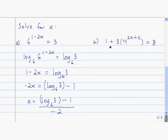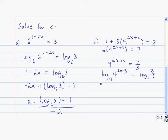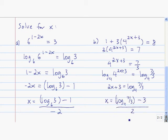Over here, first we subtract 1 from both sides, then divide by 3. The next thing we do is take log base 4 of both sides. Simplify the left-hand side to get just 2x plus 3, then subtract 3, and then divide by 2. So your final answer is x equals log base 4 of 7 thirds minus 3, divided by 2.